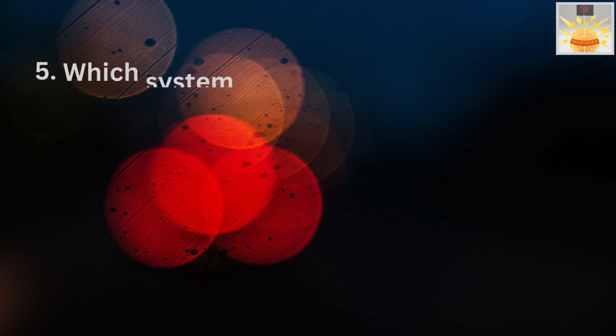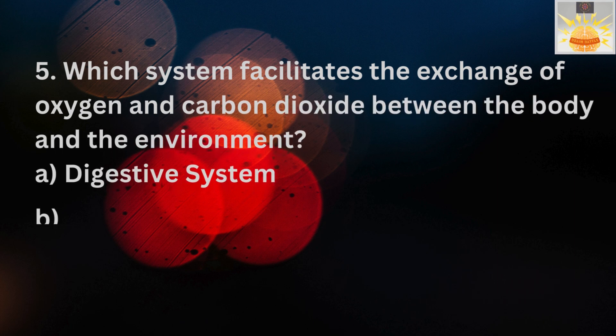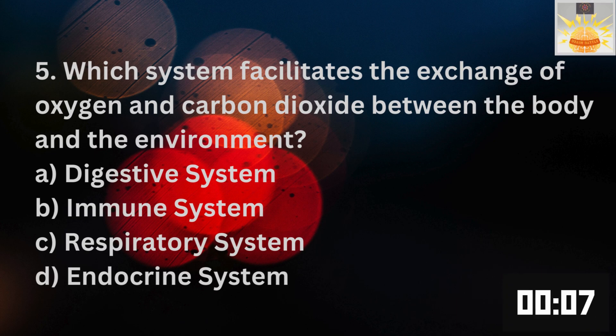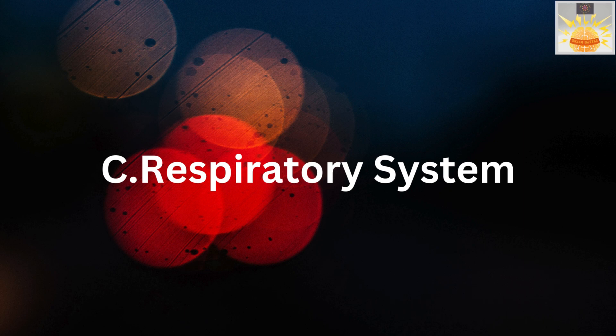5. Which system facilitates the exchange of oxygen and carbon dioxide between the body and the environment? A. Digestive system. B. Immune system. C. Respiratory system. D. Endocrine system. The right answer is C. Respiratory system.